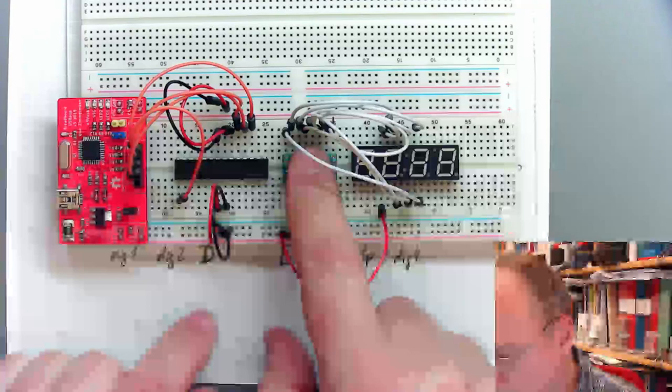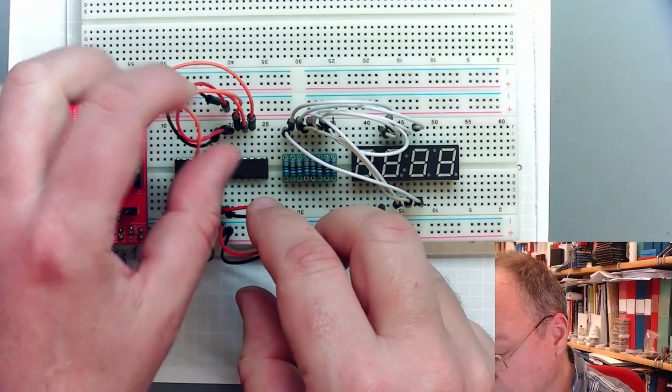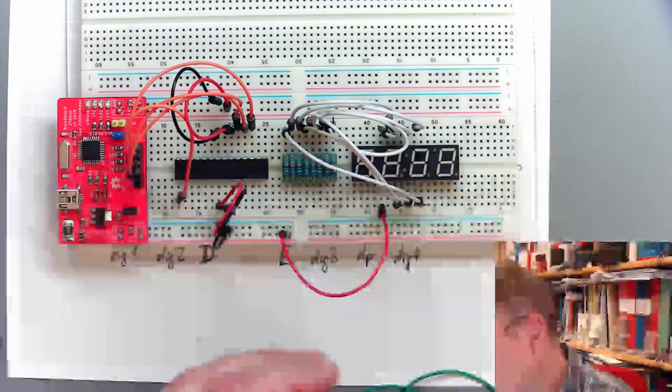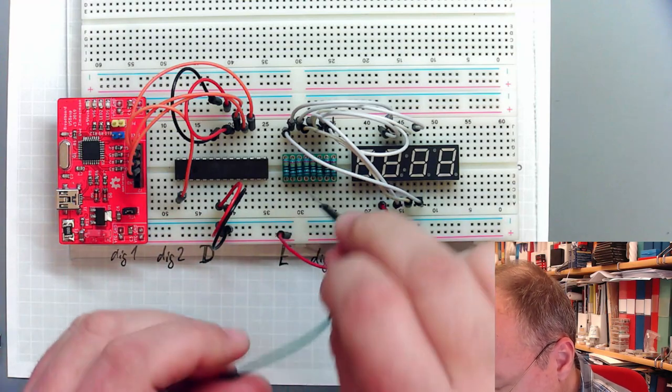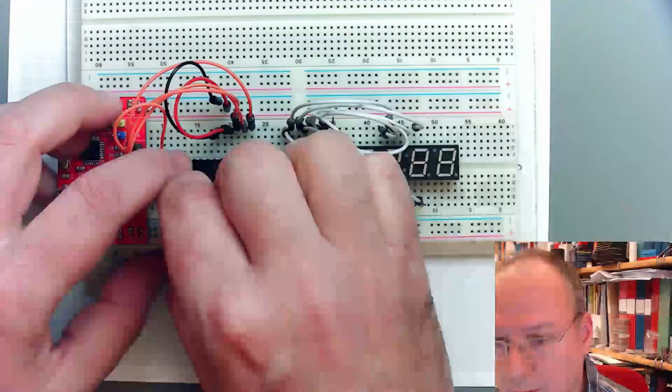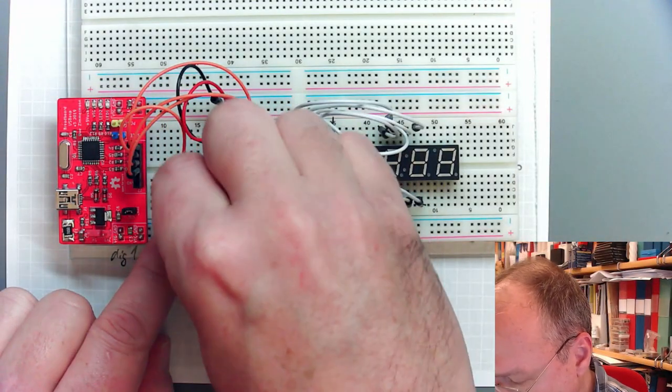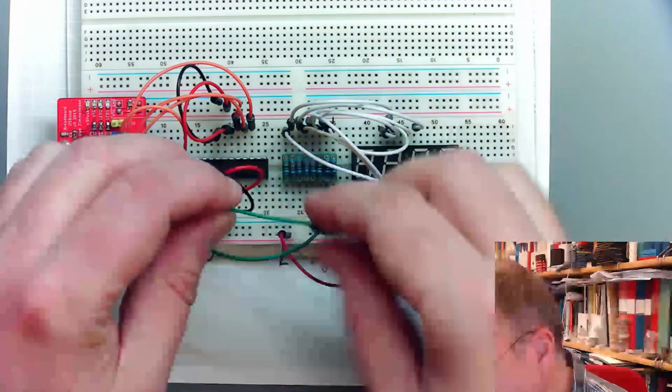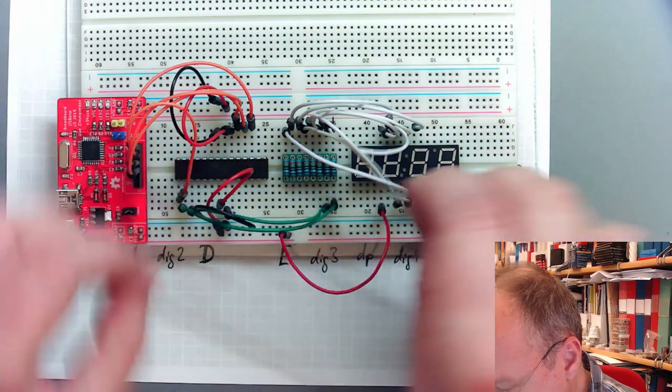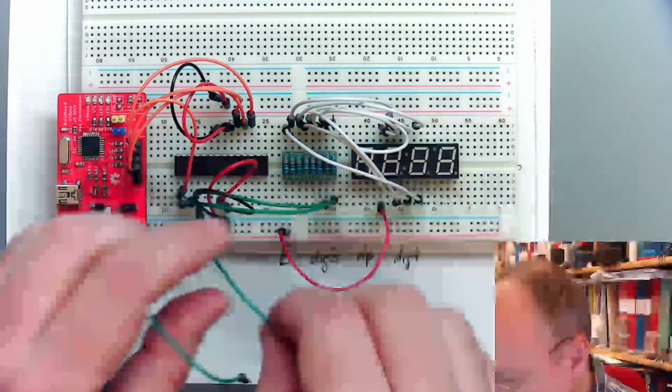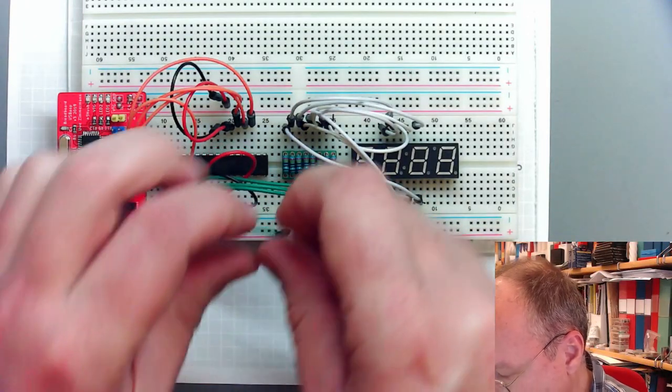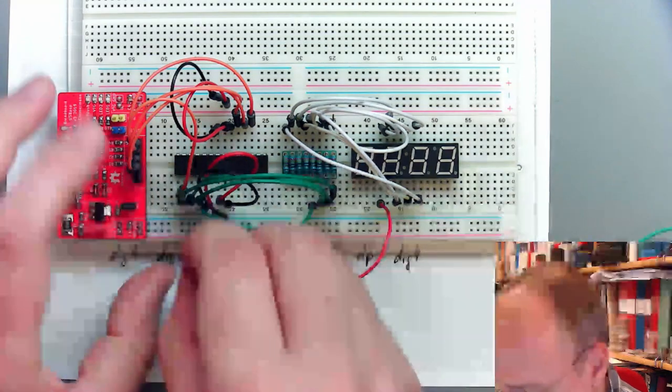And now I want to connect these to the pins of port D. So I'll take green wires here and take the rightmost resistor and connect it to pin D0 on our microcontroller, which is here. D1 is here and goes to the next. D2 is the next one in the sequence. D3, D4.